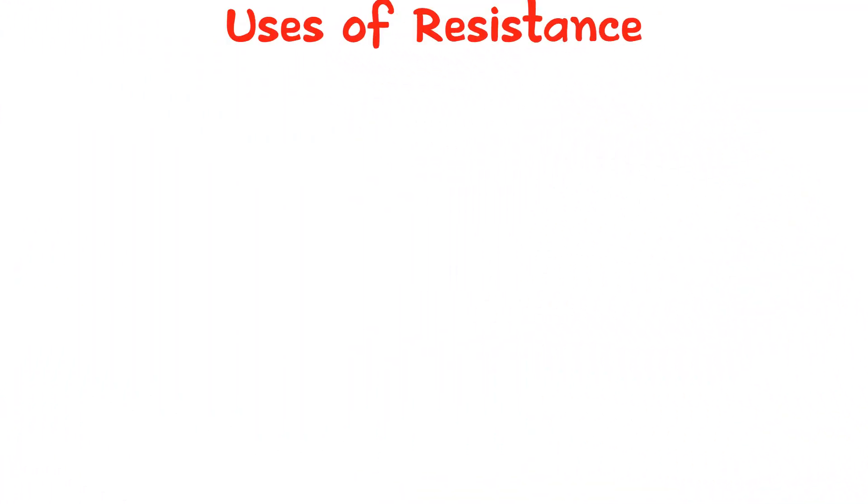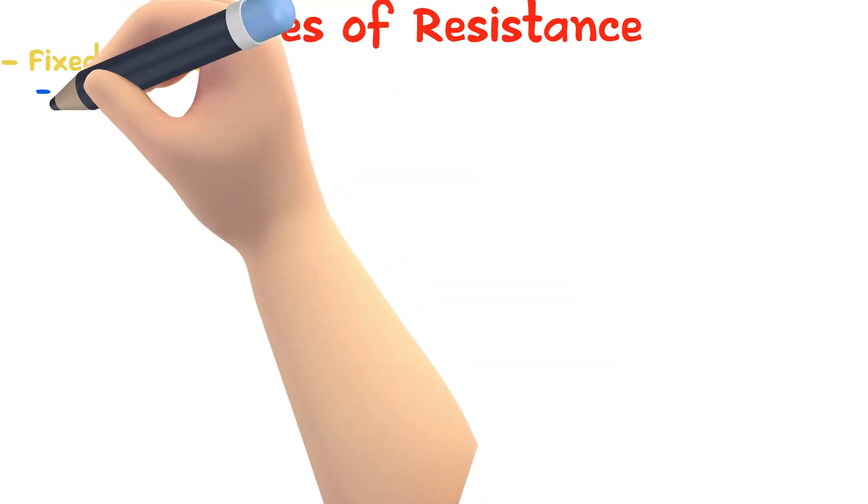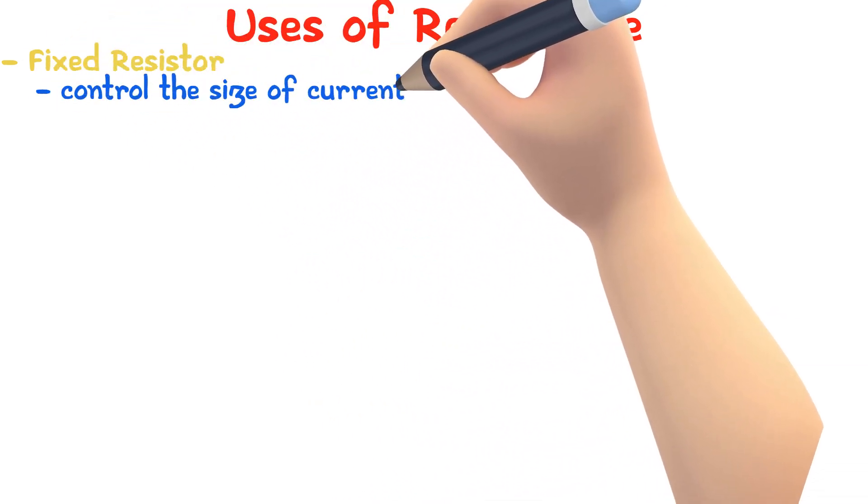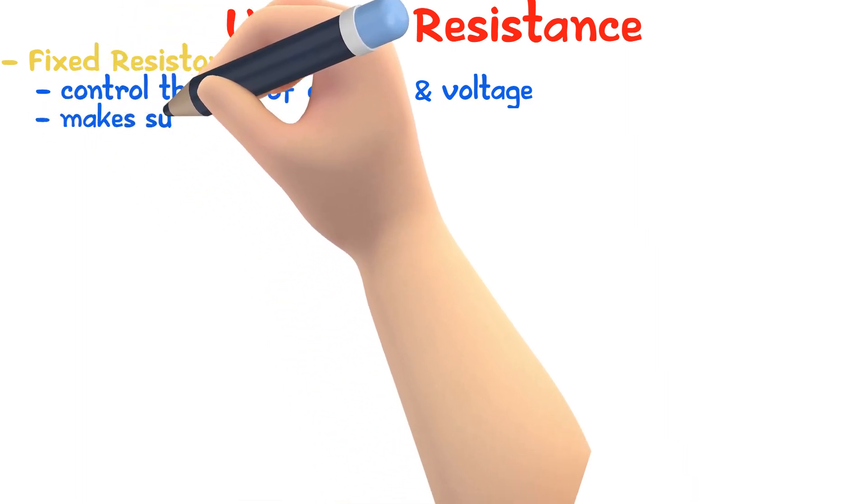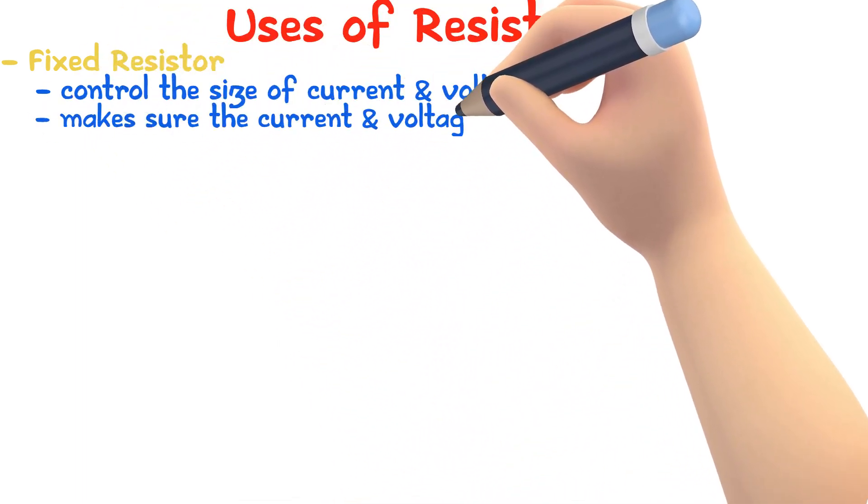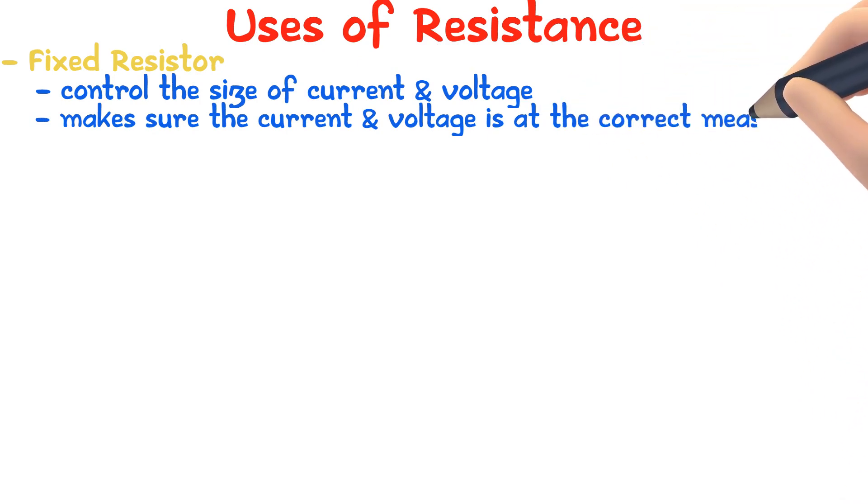We can use resistance in many ways. A fixed resistor is included in circuits to control the size of current and voltage. The presence of the resistor makes sure that the current and voltage for a specific component is at the correct needed measurement.